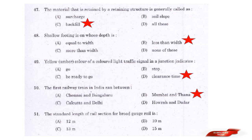Question: The standard length of rail section for broad gauge rail is — options: 12m, 10m, 13m, 15m. Answer: Option C — 13m. The standard length of rail section for broad gauge rail is 13m.